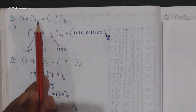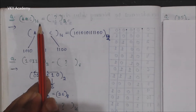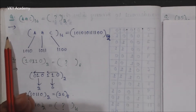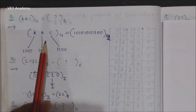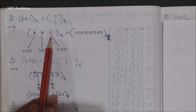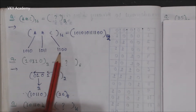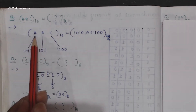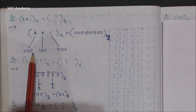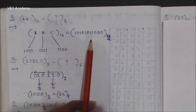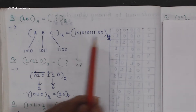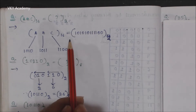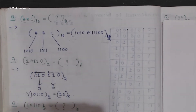Let us solve a few more examples. I have a hexadecimal number ABC (base 16) and I need to convert it into binary. Since a hexadecimal number always has a group of 4 bits: C has equivalent binary 1100, B has equivalent binary 1011, and A has equivalent binary 1010. Writing all these bits together we get the binary number where the rightmost bit is the LSB and the leftmost bit is the MSB.